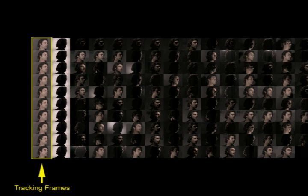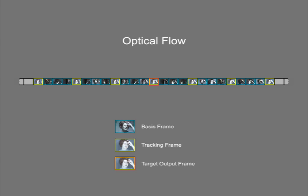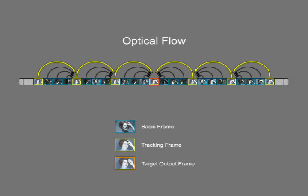Since performing optical flow between differently illuminated frames is difficult, we insert diffusely lit tracking frames at several times the target frame rate to improve the tracking results. To warp the images, we first compute optical flow between the tracking frames. We interpolate this flow to warp each basis frame to the nearest tracking frame toward the target output frame, then apply a second warp to transform the frame all the way to the target output frame.